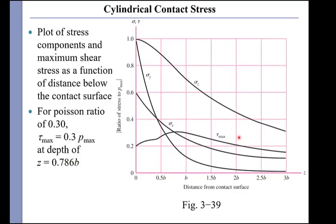And once you have those, you can determine the maximum shear stress, which has a value for a Poisson's ratio of about 0.3. The maximum shear stress is about 0.3 times the maximum pressure at a depth of now a little over three quarters of the contact patch radius B. So again, we have a maximum shear stress below the surface. So the failure mechanism again would be driven by that shear stress below the surface, which then makes its way to the surface and creates a contact pit.